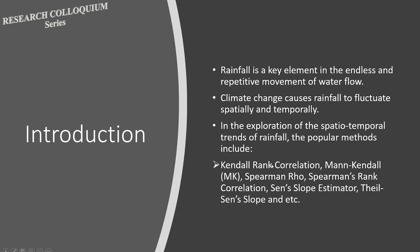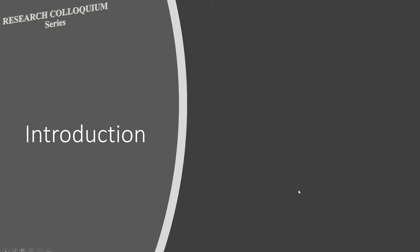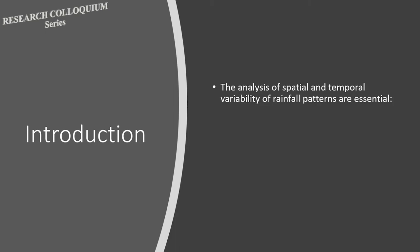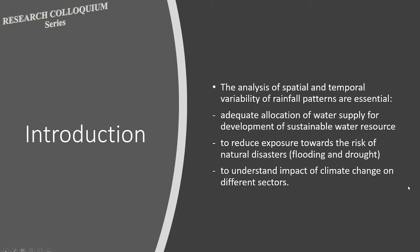Among the popular methods to explore spatial and temporal trends of rainfall include Kendall rank correlation, Mann-Kendall, Spearman's rho, Sen's slope estimator, and many more. We need to analyze these trends to ensure sufficient allocation of water supply for sustainable water resource development and to reduce exposure to natural disasters such as flood and drought, which are highly correlated to rainfall.